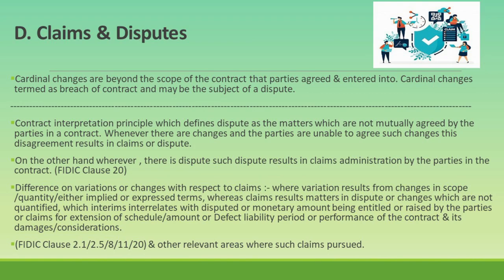FIDIC Clause 20 provides a structured process for handling claims, disputes, and arbitration. It requires the contractor to notify the engineer of claims and keep detailed records. The engineer assesses claims and makes determinations. If disputes arise, the clause outlines steps for amicable settlement, adjudication, and arbitration. Differences on variations or changes with respect to claims occur when variation results from changes in scope, quantity, or either implied or expressed terms. Claims arise from matters in dispute or changes that are not quantified, and these claims interrelate with disputes over monetary amounts, extensions of schedule, defect liability periods, or performance of the contract and its associated damages or considerations.